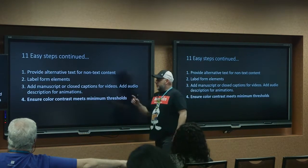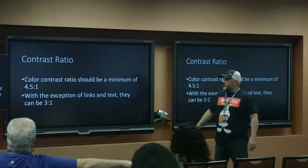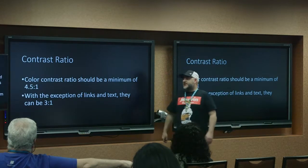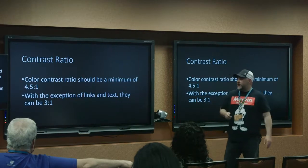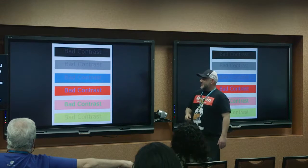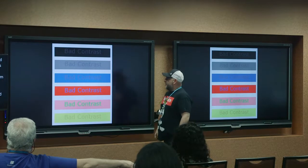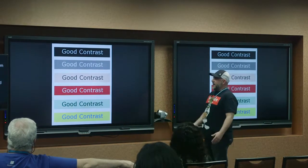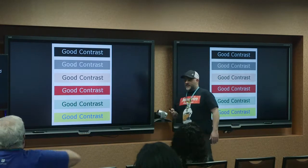Number four: ensure color contrast meets minimum thresholds. Color contrast should be a minimum of 4.5:1, with the exception of links and regular text which can be 3:1. Personally, I wish they had said everything needs to be 4.5:1 — it would have made it easier — but they give you a little leeway. This is an example of bad contrast — it just speaks for itself, it's terrible. And that is an example of good contrast — you can absolutely see the difference. Just a couple of color choices and you're making a big difference for somebody.